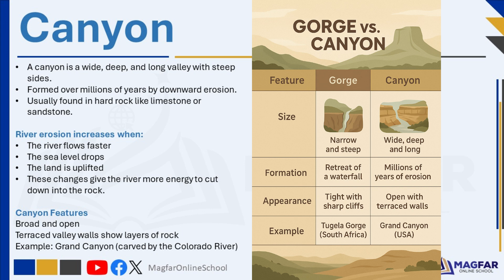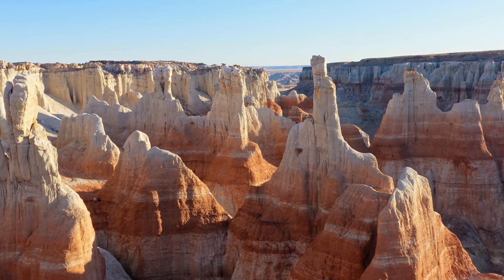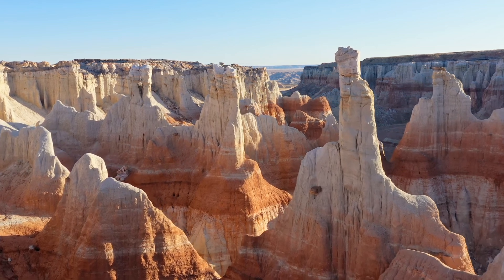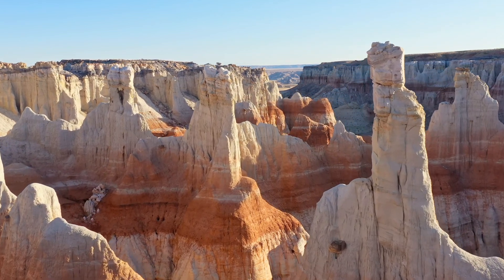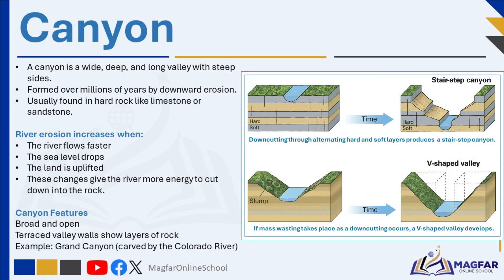In contrast, a canyon is broader, wider, and much larger, formed over millions of years as a river slowly erodes through hard rock like sandstone or limestone. As the river cuts deeper, it leaves behind terraced valley walls, which are step-like features showing different layers of rock. A well-known example is the Grand Canyon in the United States, carved by the Colorado River. So, while both landforms are shaped by rivers, the main difference is that gorges are narrow and steep, while canyons are wider with visible rock layers and more open space.